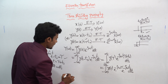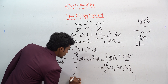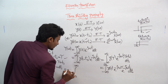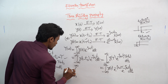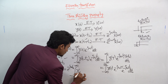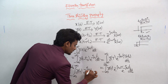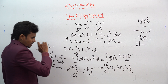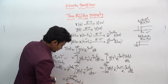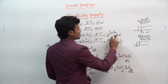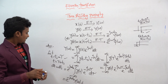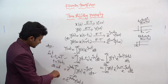Taking the constant e^(-jωt₀) outside the integral, we get: e^(-jωt₀) times the integral from -∞ to +∞ of x(τ)·e^(-jωτ) dτ. This integral is exactly X(ω), so Y(ω) = e^(-jωt₀)·X(ω). This proves the time shifting property.